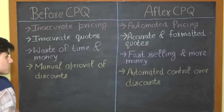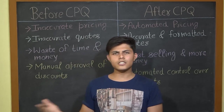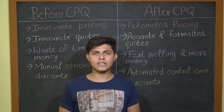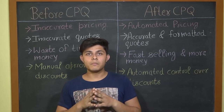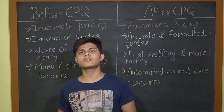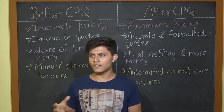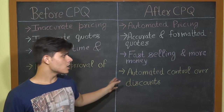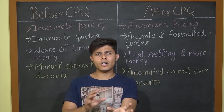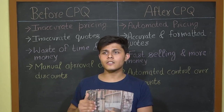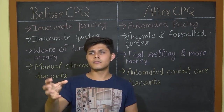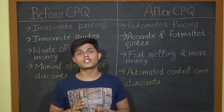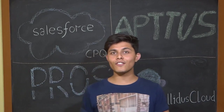The fourth point is manual approval of discounts. Before CPQ, manual approval could take seven to twelve days, especially in companies with hundreds of sales representatives and few approvers. After CPQ, you have automated control over discounts — you configure rules based on customer information so the system automatically determines appropriate discount levels, eliminating the need for manual review cycles entirely.